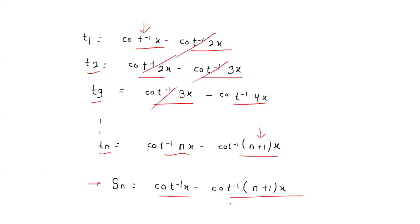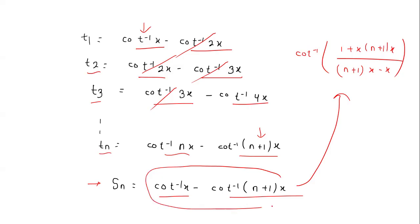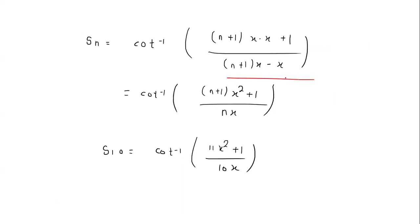This result can be further written as cot inverse of (1 + x·(n+1)x) divided by ((n+1)x − x), which simplifies to cot inverse of ((n+1)x² + 1) divided by nx. For the problem we need S₁₀, so putting n = 10, this becomes cot inverse of (11x² + 1) divided by 10x.